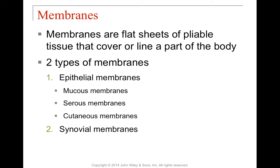Let's talk about membranes. Membranes are flat sheets of pliable tissue that line one region of the body and keep it separate from a different region. We have two major types: epithelial membranes, which line epithelial cells — things like mucus membranes, serous membranes, and cutaneous membranes (cutaneous just means skin, so subcutaneous would be under the skin) — and synovial membranes, which are part of joints.